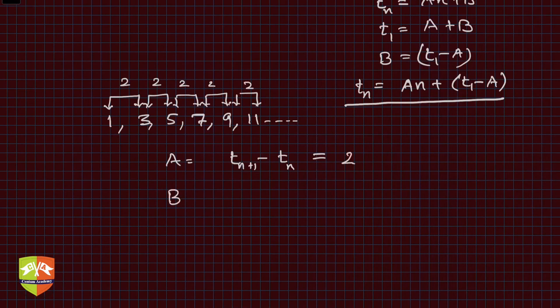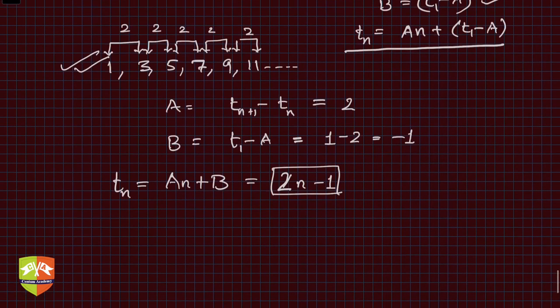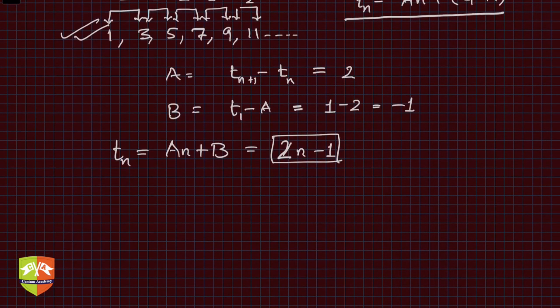What will be b? We saw b as t1 - a. Here t1 is the first term, which is 1, and a was 2, so 1 - 2 is -1. In this case, the nth term will be given by an + b, which is 2n - 1. We figured out the expression given the sequence.